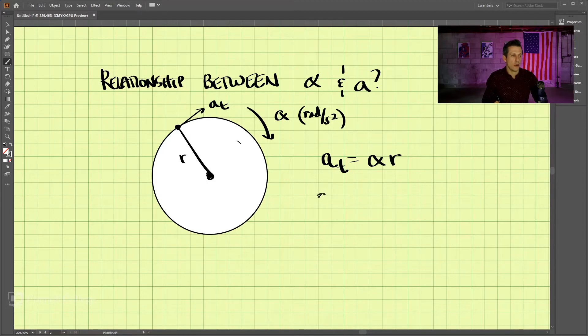Now, for the normal acceleration, what is that equal to? Well, previously we used v squared over r. And do you remember what we found for the velocity at this point?